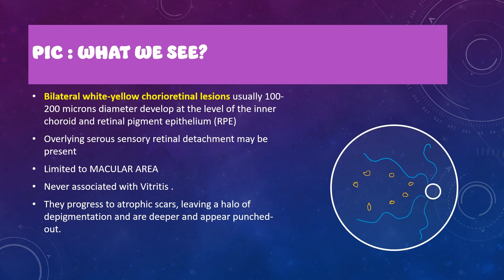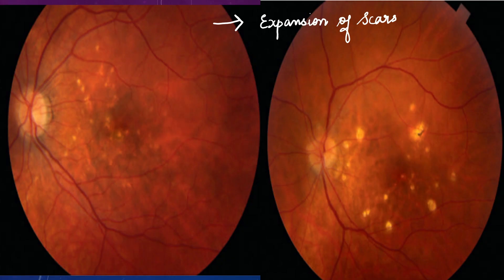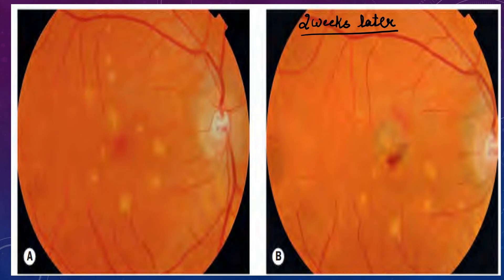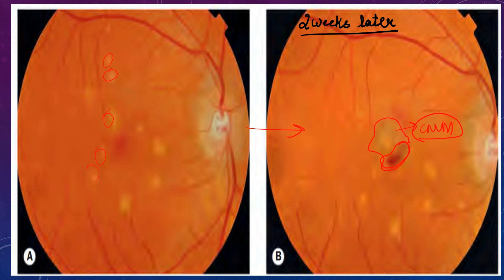PIC scars can progress, developing a halo of depigmentation, appearing more punched-out. Subretinal neovascular membrane (CNVM) can be associated with 40 to 75% of individuals. In these fundus images, you can see punctate lesions in the macula, with expansion of lesions over time. A developing heme indicates CNVM formation. Development of CNVM is common in PIC, seen in approximately 45 to 70% of individuals.